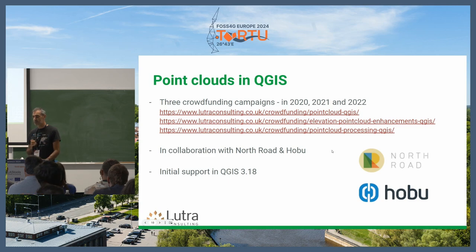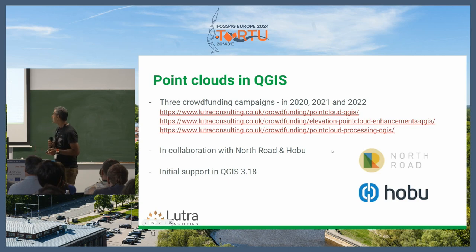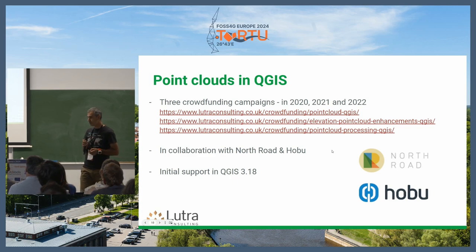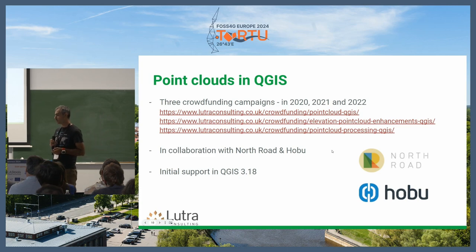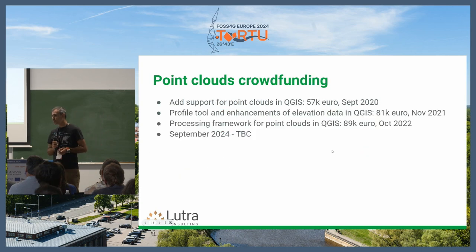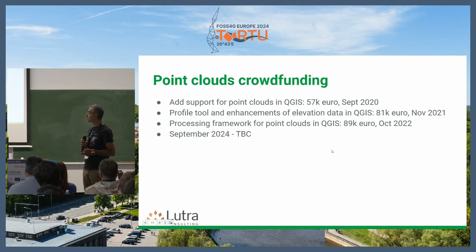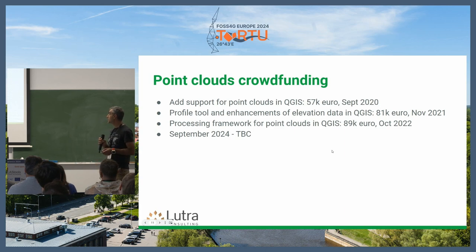The final crowdfunding added a processing framework. It was done in collaboration with North Road, a QGIS developer company based in Australia, and Hobu, the PDAL developers in the US. These are some numbers compared to proprietary software: the first crowdfunding was below 60,000 euro, the second 80,000 euro, and the last around 90,000 euro.